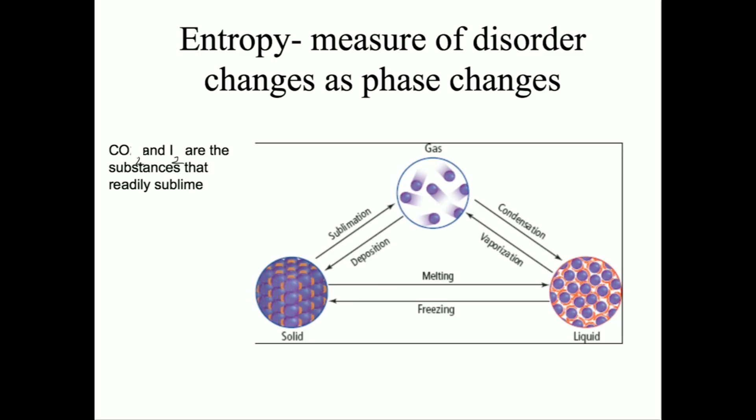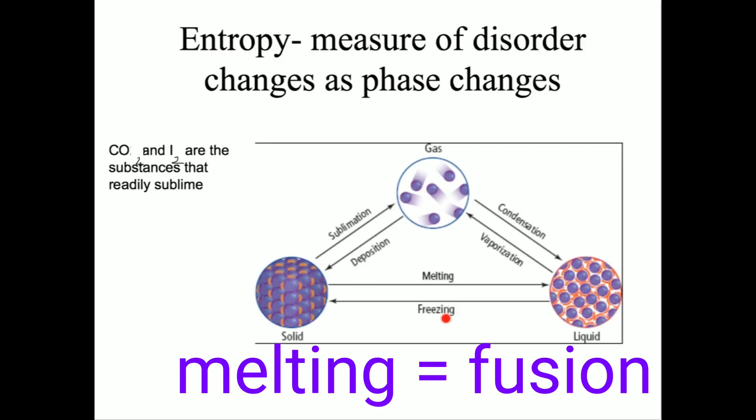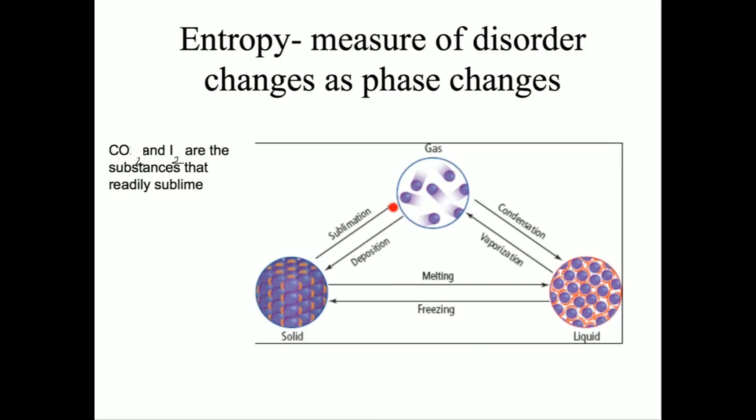Here you can see a description of the three states of matter and the phase change that occurs when you change from one state to another. Many of these are likely to be review. You are already aware of what melting and freezing, vaporization or boiling, and condensation are. But the two new phase changes are sublimation, which occurs when a solid turns straight into a gas. This happens with dry ice or carbon dioxide. It also happens with iodine. Carbon dioxide and iodine are two substances that readily sublime at STP.